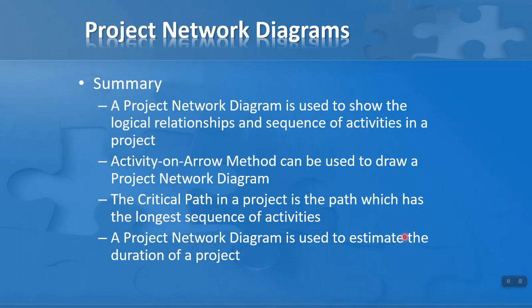In summary, a project network diagram is used to show the logical relationships and sequence of activities in a project, making it really useful for problem-solving. The method we've used is the activity-on-arrow method. The critical path is the path with the longest sequence of activities — seven days in our example — and it teaches us to focus on the activities that make up that path. Finally, a project network diagram is used to estimate the duration of a project. I hope you found this video useful.